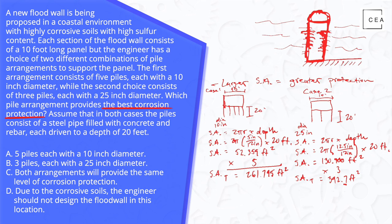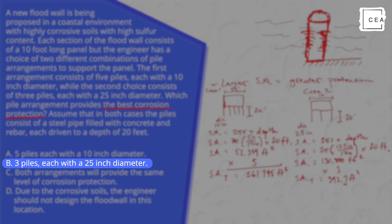So we look at our answer choices and we see that answer choice B reflects that scenario where we have three piles each with a 25 inch diameter. So the answer is B and we have finished this problem.